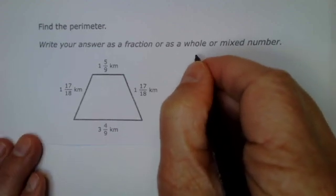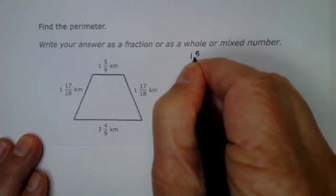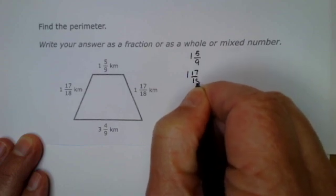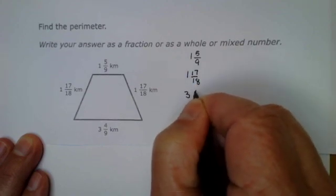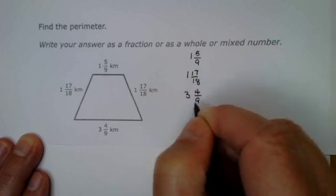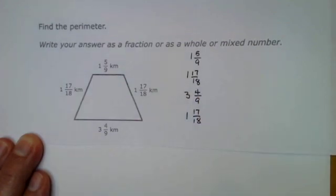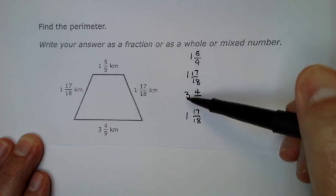So I need to take 1 and 5/9, add it to 1 and 17/18, add it to 3 and 4/9, add it to 1 and 17/18. Again, I'm going to add all these whole numbers up.